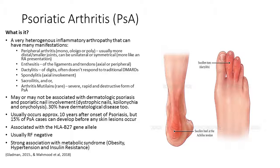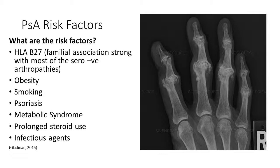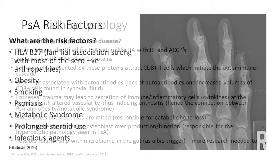Psoriatic arthritis is usually rheumatoid factor negative, and there is a strong association between this condition and metabolic syndrome. A key risk factor is a strong familial association with psoriatic arthritis and most of the seronegative arthropathies.